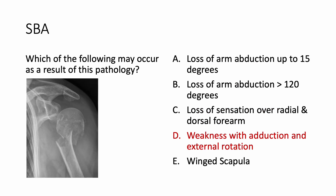So the right answer is weakness with adduction and external rotation, which is option D. I hope you enjoyed the video. Please do like, share, and subscribe for more such questions. Till then, happy studying and peace.